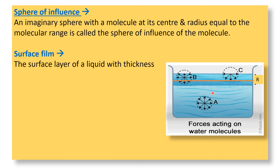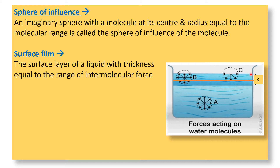Now, what is a surface film? The radius R of the sphere of influence is equal to the range of molecular force, and this is also equal to the thickness of the surface film. The surface layer of a liquid with thickness equal to the range of molecular force is called the surface film. This is the region within which intermolecular forces remain effective.